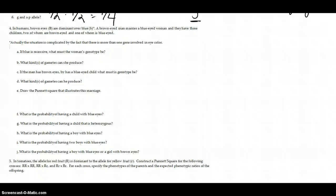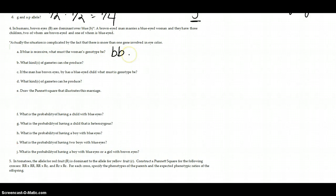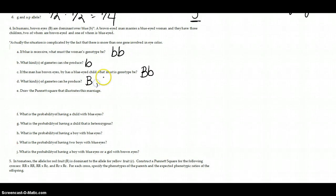In humans, brown eyes are dominant over blue. Note that eye color is actually more complicated than one gene, but here we think of it as pigment being deposited or not. A brown-eyed man marries a blue-eyed woman and they have three children: two brown-eyed and one blue-eyed. Since blue is recessive, the woman must have two recessive alleles to express blue eyes, so her genotype is little b little b — she can only produce one type of gamete: little b. The man has brown eyes but had a blue-eyed child, so he must carry the recessive allele. His genotype is big B little b, and he can produce gametes with either big B or little b.